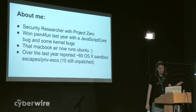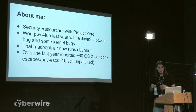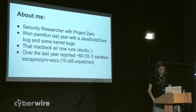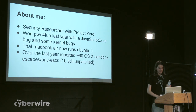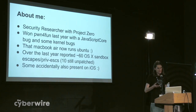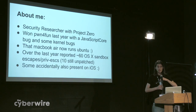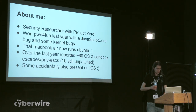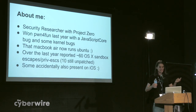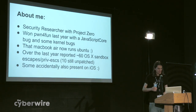Over the last year, as part of my work at Google, I've reported about 60 sandbox escapes and privilege escalations, about 10 of which are still unpatched, and we'll see a demo of one of those later, after we've understood a bit about the very broad attack surface available to us on OSX. All the work I've done has really been focusing on OSX, but there is an awful lot of overlap between the OSX kernel and user space and iOS. I have accidentally found some iOS kernel bugs, even though that's not what I was looking for.